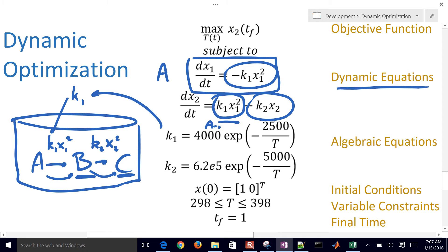So the first part is A goes to B, and then B goes to C. So these are dynamic equations that we derive from species balances.